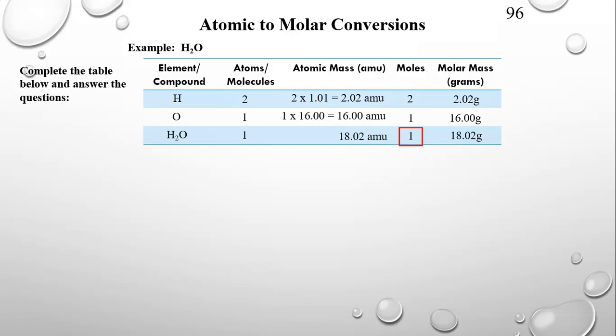In chemistry, we can treat the words weight and mass as meaning the same thing — molar weight, molar mass, atomic weight, atomic mass. In physics you've learned there's a difference, but we're not going to make that distinction in chemistry. We tend to say mass because it's more precise.